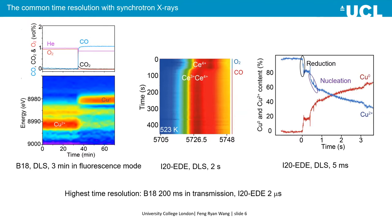This is already quite fast, but it's not the limit of Diamond. The fastest time resolution at B18 is roughly 200 milliseconds. For I08, using a Germanium solid-state detector, it's possible to get two microseconds per spectrum. With the upgrade to Diamond-II, the SWIFT beamline could give roughly two nanoseconds per spectrum for hard X-ray spectroscopy. But that is the limit — for synchrotron techniques in continuous mode, it's not possible to go beyond a microsecond.